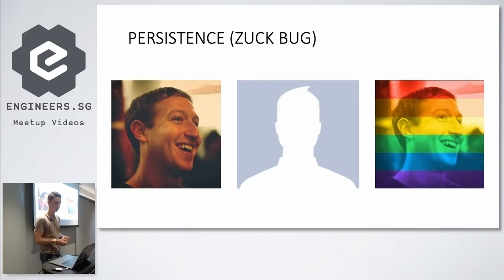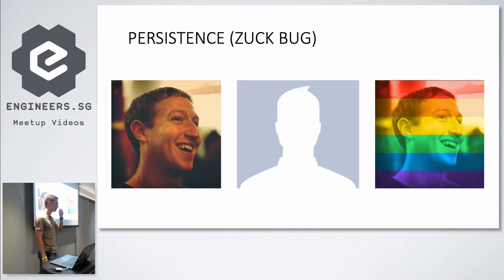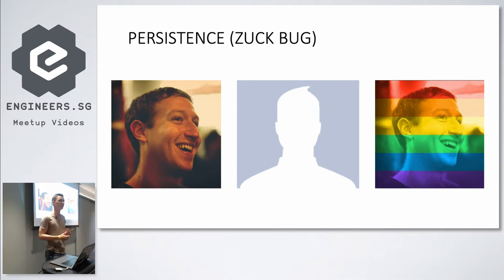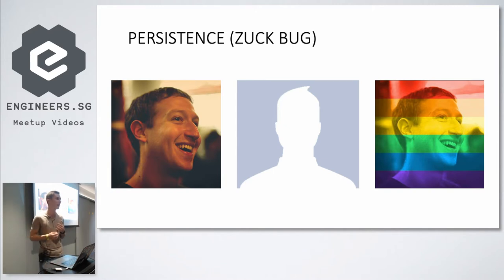The persistence lesson is that the probability of something shipping is a function of you. If you put two different people on the same project with similar skill sets, you'll get different results. Someone will get farther, and it's often because of how willing they are to keep pushing forward even when they hit bugs or something breaks. That's something that separates junior engineers from senior engineers.